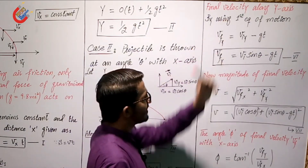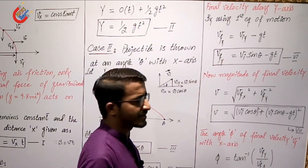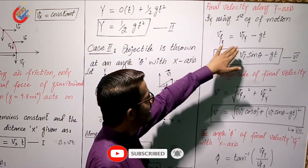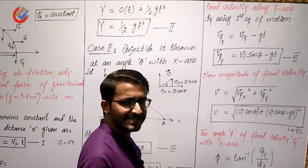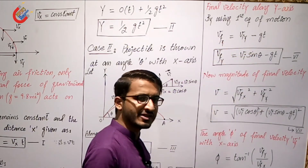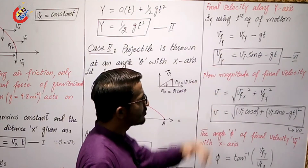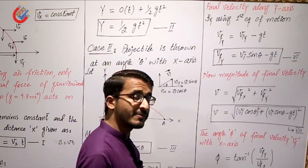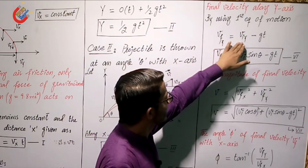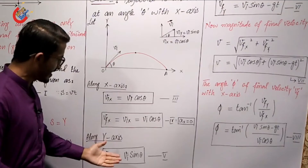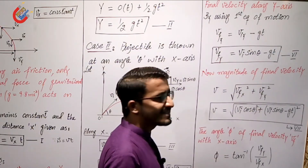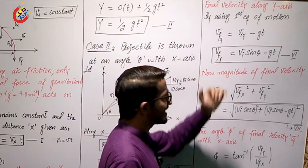Along the y-axis, the initial velocity component is Viy = Vi·sinθ. For the final velocity along y-axis, we apply the first equation of motion under gravity: Vfy = Viy − gt. Substituting Viy = Vi·sinθ, we get Vfy = Vi·sinθ − gt. This is equation number 6, representing the final velocity of the projectile along the y-axis.